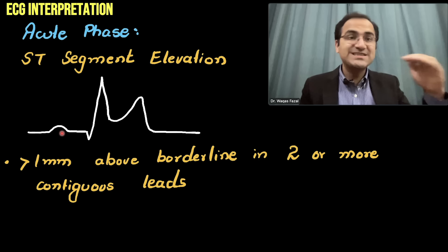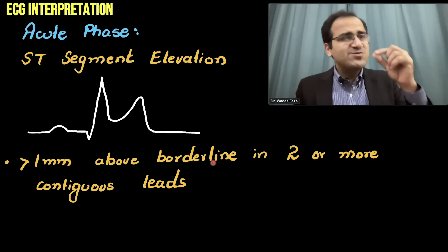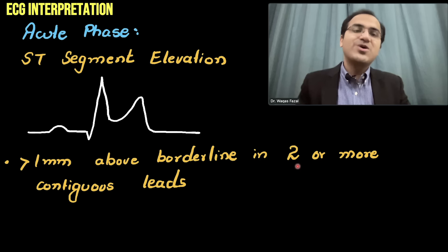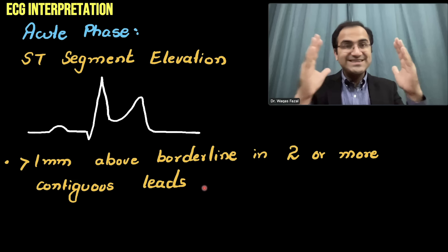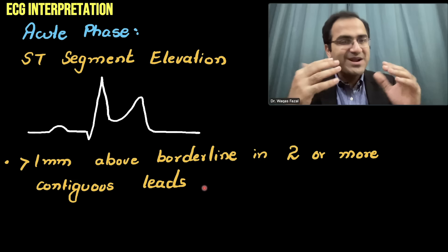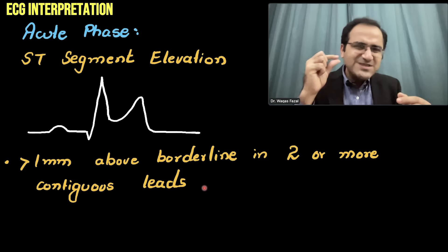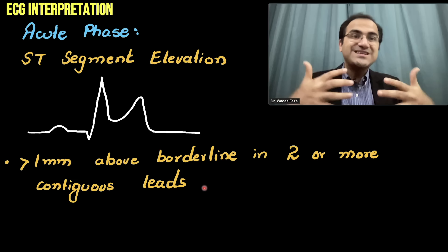What counts as ST segment elevation? You should look at the baseline — where the PR segment is — and compare it with the ST segment. Greater than 1 millimeter (one small box) above the baseline in two or more contiguous leads qualifies. Contiguous means related leads — for example, for inferior wall MI, you look at leads II, III, and aVF. ST elevation in only one lead does not indicate ischemia.